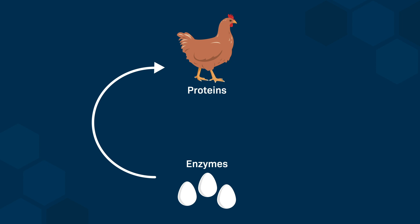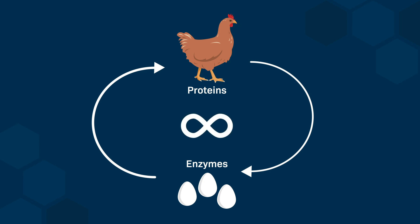To synthesize a protein, you need enzymes, but those enzymes themselves are proteins that need to be synthesized. This creates a circular dependency: you need proteins to make proteins, but you can't make proteins without proteins already being present. In essence, this scenario would require an infinite supply of enzymes to initiate the synthesis of proteins, which is not practically possible.